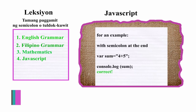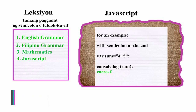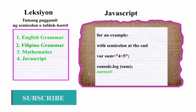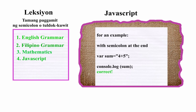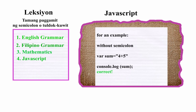For example, if I write a JavaScript code: variable name sum is equal to the sum of 4 and 5, and we put semicolon at the end. We can check in the console log if our code is working with semicolon. Then if I write without a semicolon, we can compare the results.